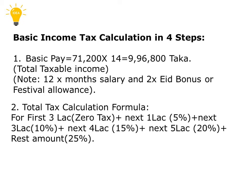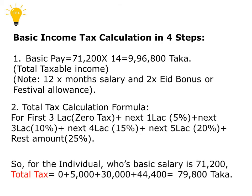The next step is the total tax calculation formula. For the first 3 lakh, it is zero tax. Next 1 lakh, 5%. Next 3 lakh, 10%. Next 4 lakh, 15%. The next 5 lakh, 20%. And the rest of the amount will have a 25% tax. For the individual whose basic salary is 71,200 Taka, the total tax will be 0 plus 5,000 plus 30,000 plus 44,400, which comes to 79,800 Taka.